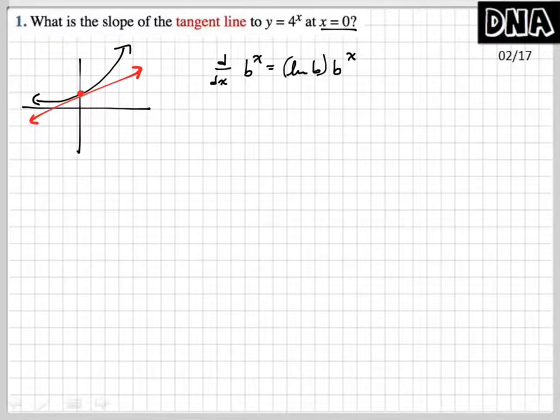Now in this case, b is 4. So you're just going to write natural log of 4 times 4 to the x. This is y prime.